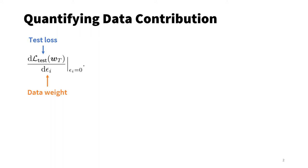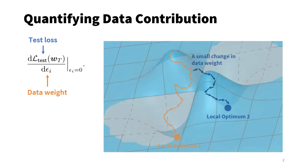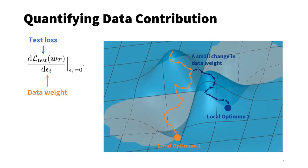We then look at this total derivative that tells us how test loss may change if the data weight is slightly changed. However, this total derivative can be difficult to evaluate because any change in the data weight can affect the SGD trajectory, potentially leading to a completely different local minimum.